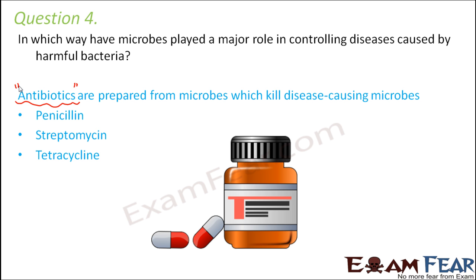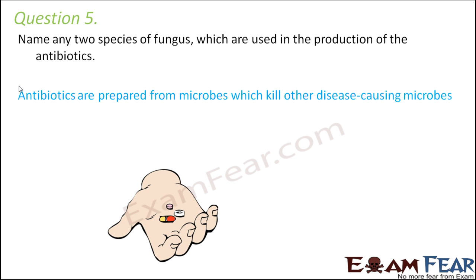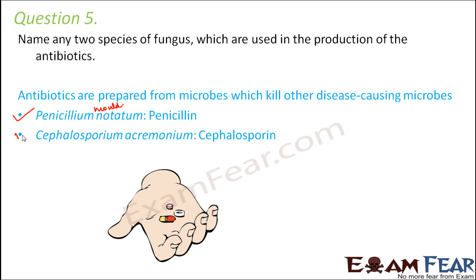Antibiotic names are derived from the particular microbe from which they are prepared. For example, penicillin is named after the mold Penicillium notatum. Question number 5: Name any two species of fungus used in the production of antibiotics. One example is Penicillium notatum, a mold under the group of fungi. The other example is Cephalosporium acrimonium, which helps in the preparation of the antibiotic cephalosporin — also a fungus.